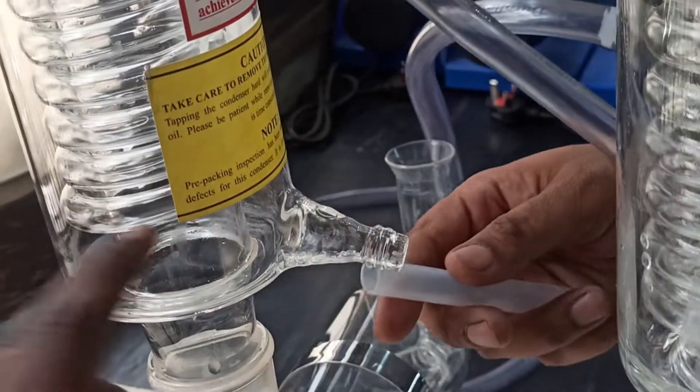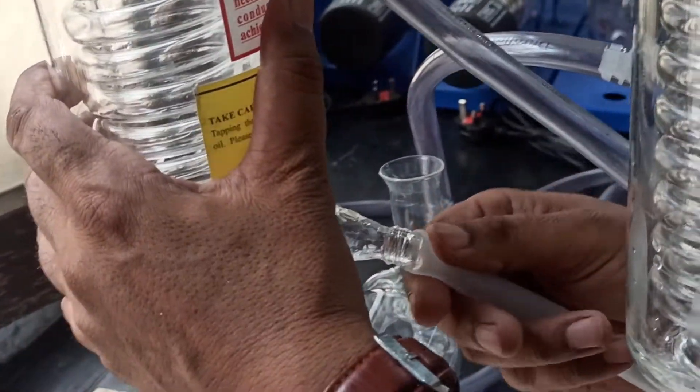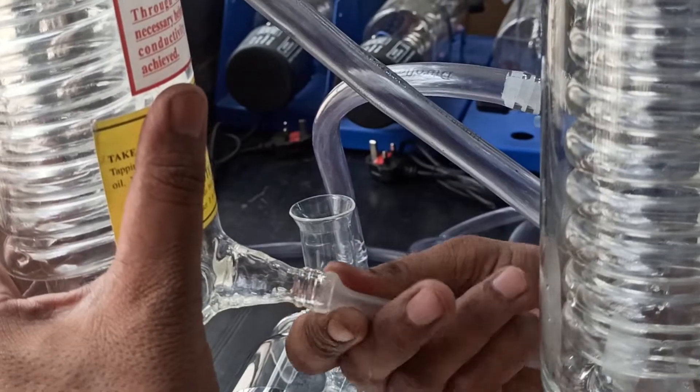Connect the distilled water output of the first stage with the input of the second stage boiler with silicon pipe.